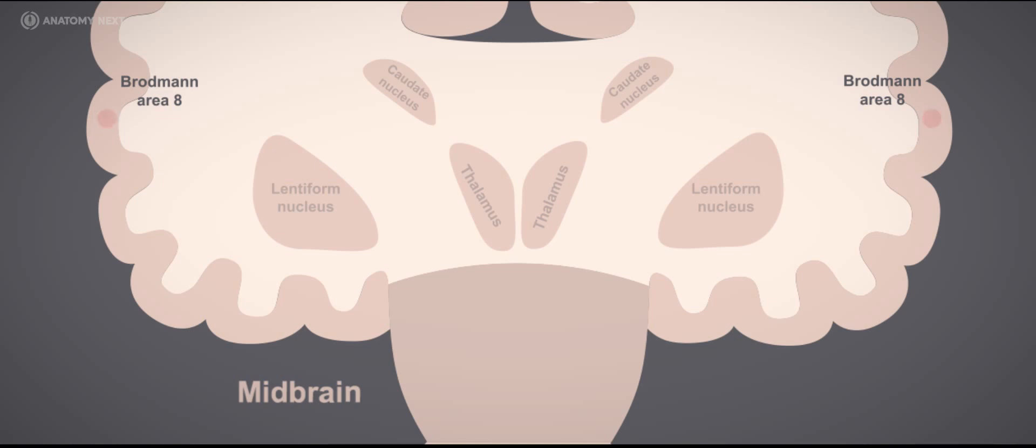It is believed to be involved in planning complex movements, in this case, movements of the eyeball. The axons of these neurons then leave the cerebral cortex and head to the midbrain, to synapse with the oculomotor nuclei located in the rostral midbrain.